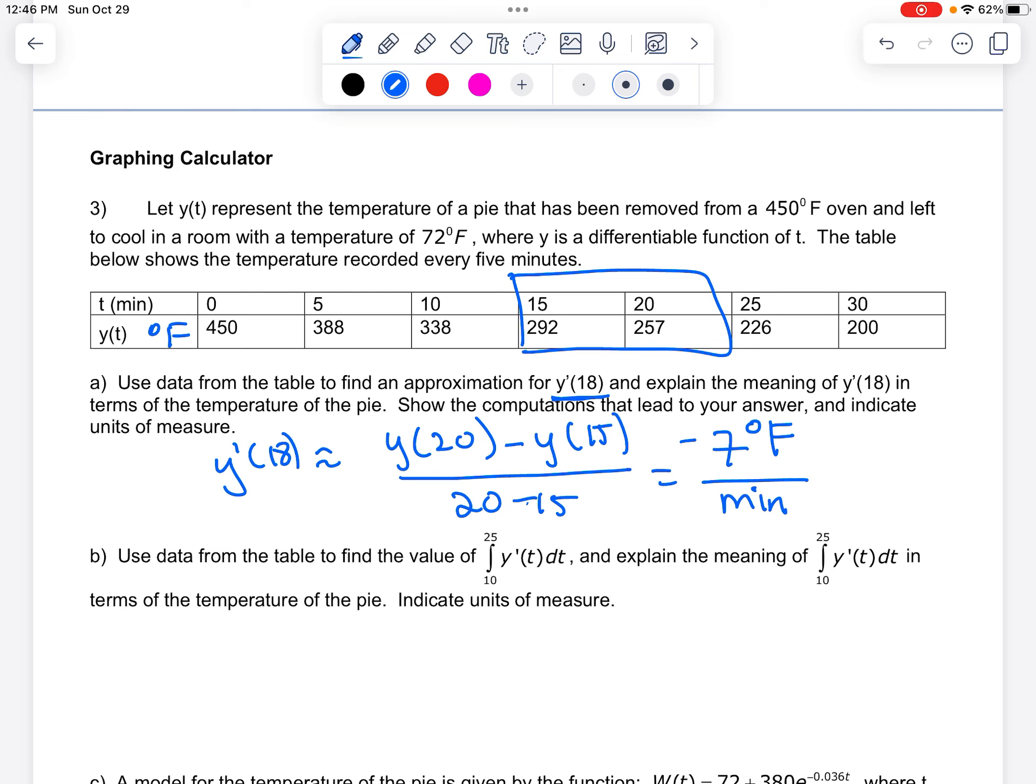And then my interpretation. So when we interpret a derivative, it is what's happening at that moment in time. So this is saying at t equals 18 minutes. And what are we talking about? The temperature of the pie. And I always explain the negative or the positive. We're talking about a rate, so it's a negative. So it's decreasing at a rate of 7 degrees Fahrenheit per minute.